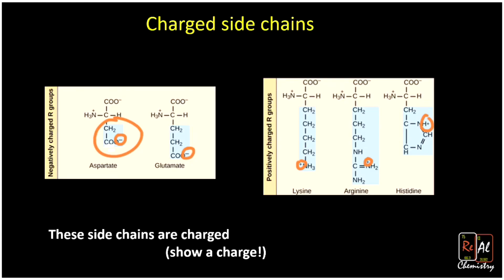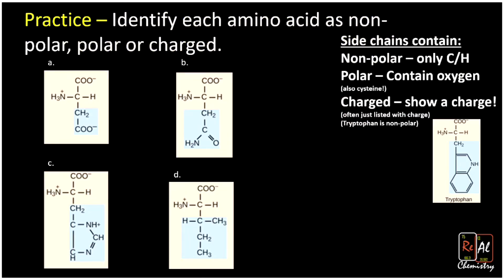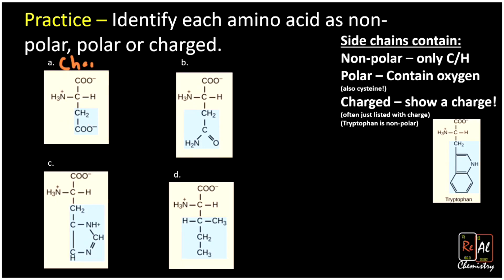Let's quickly identify a few amino acids as charged, polar, or nonpolar. The amino acid on the top left — you might notice there's oxygen, but there's also explicitly a charge drawn. Very often when there's a charge drawn, it'll be something like NH2 or COO, so keep an eye out for those. That one turns out to be a charged amino acid. Moving to the next one: there's oxygen, and there's no charge explicitly drawn, so since we have oxygen and no explicit charge, this is going to be a polar side chain. Remember, polar side chains contain oxygen, or it's cysteine — if you see cysteine, throw it in the polar camp.